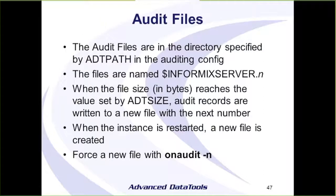The audit files are stored in the directory you specify in the configuration, named with the Informix server name and a sequential number at the end. When the file gets to the specified size (2MB in our examples), it creates a new file and increments the number. Also, if you restart Informix, you'll get a new file then too — or you can force it at any time. Perhaps you want to archive old files: switch to a new file number, then remove, zip up, or otherwise handle the previous files.